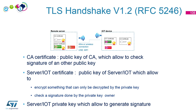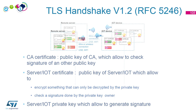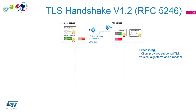Before starting communication, we have a CA certificate which allows checking other certificates, a server certificate in the remote server, and an IoT certificate in the IoT device — each containing a public key with its associated private key. In a real case, the CA certificates embedded in the server and in the IoT are not the same, but here I keep the same to simplify.